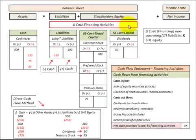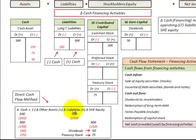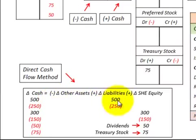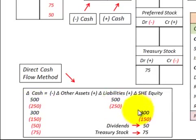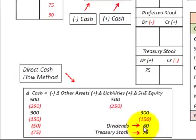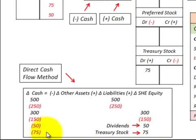Looking at the change in cash flow for financing activities, those would be our non-operating long-term liabilities and shareholders' equity. An increase in liabilities transfers over to an increase in cash. For shareholders' equity accounts, increases translate to a cash increase and decreases reduce cash. We have to be careful with contra accounts like dividends — cash paid to shareholders — where an increase in dividends reduces cash. Same for treasury stock: buying it back and increasing shareholders' equity reduces our cash.